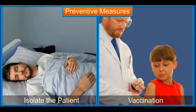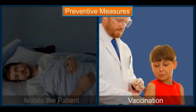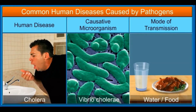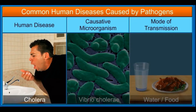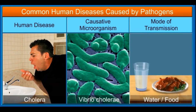To prevent the spread of polio, we need to keep the patient in complete isolation. Vaccines should be administered at the proper age. Cholera is caused by the bacterium Vibrio cholerae and transmitted through water or food.